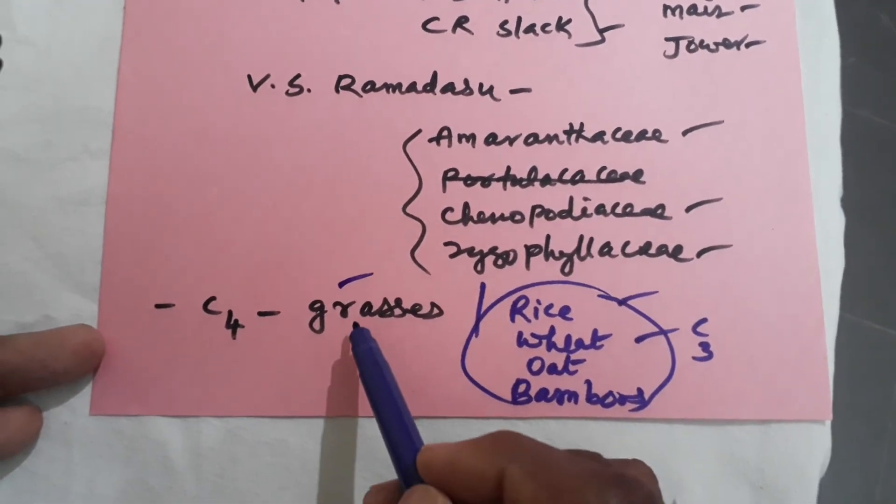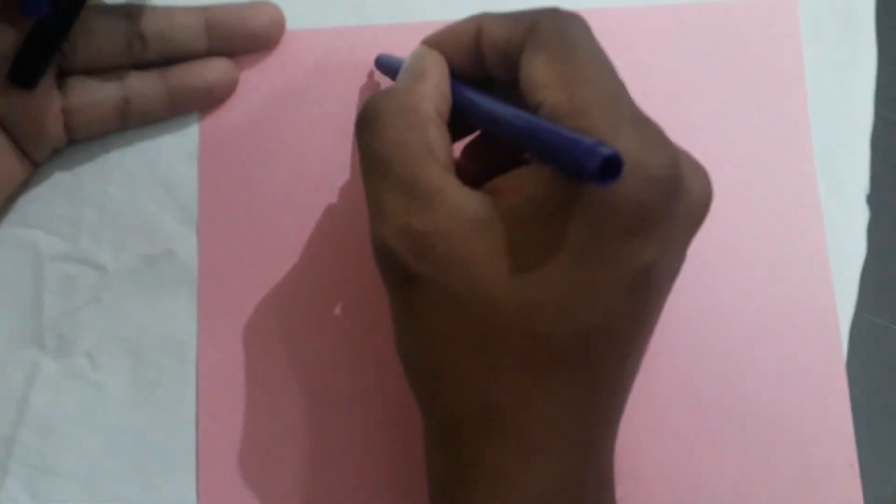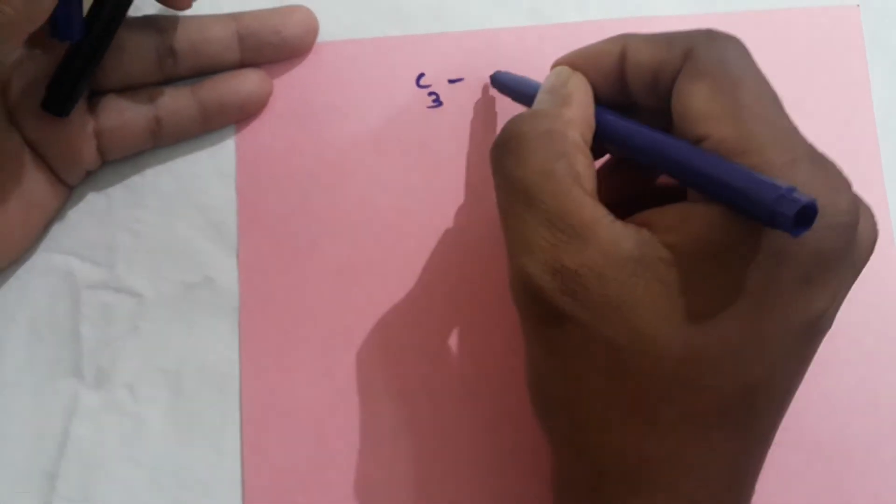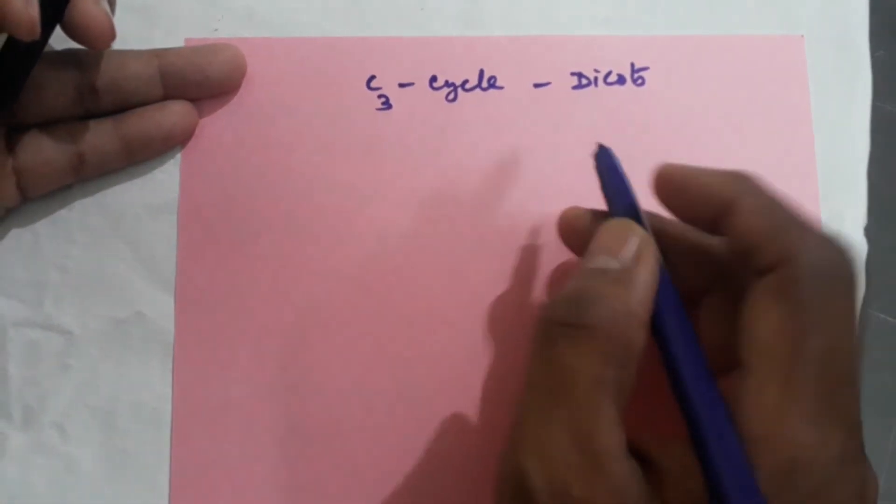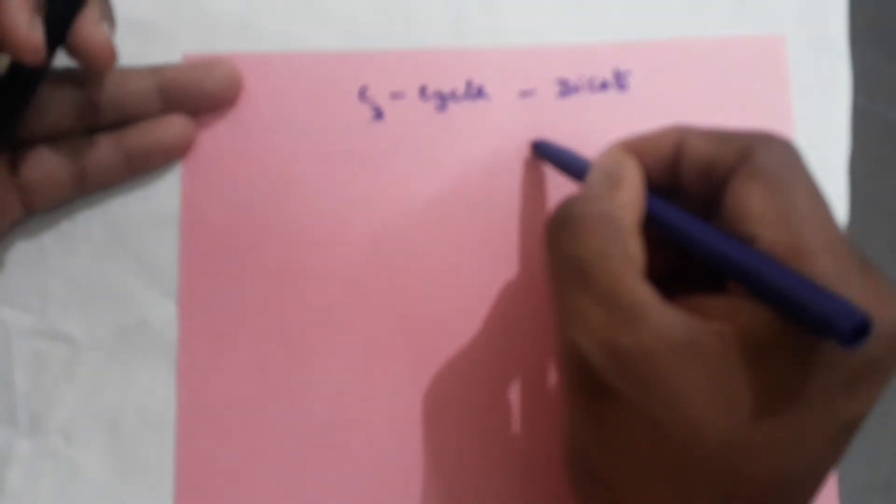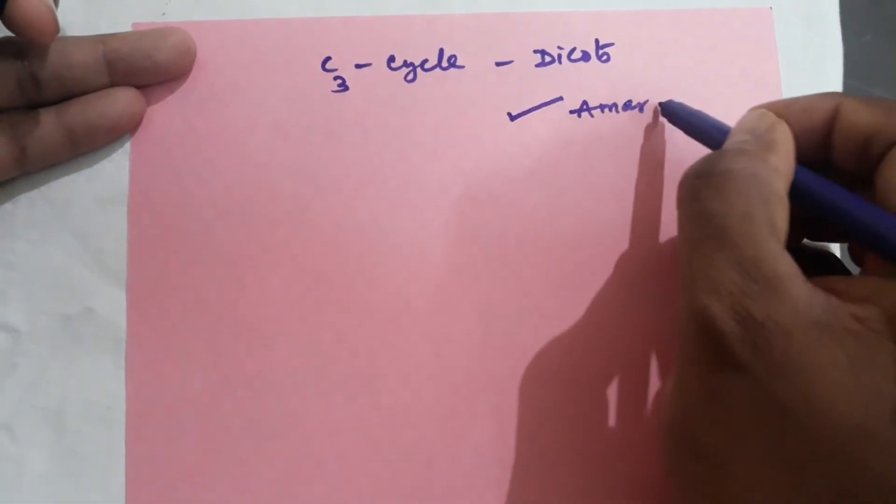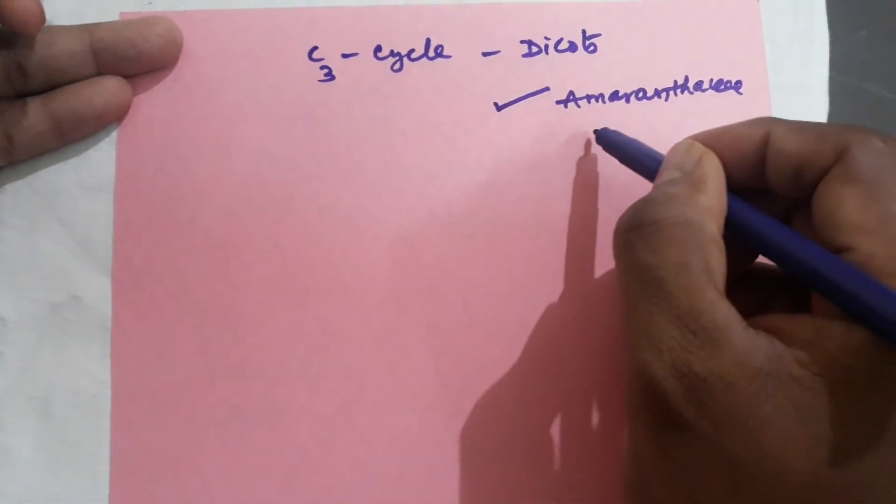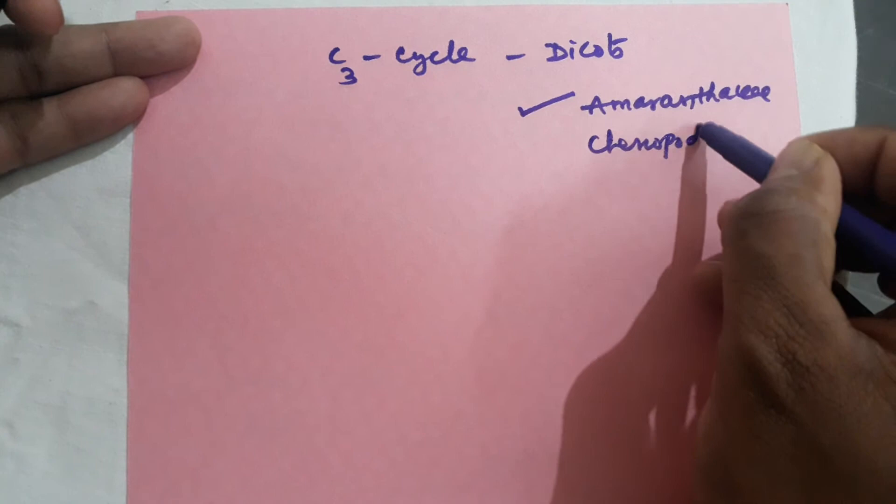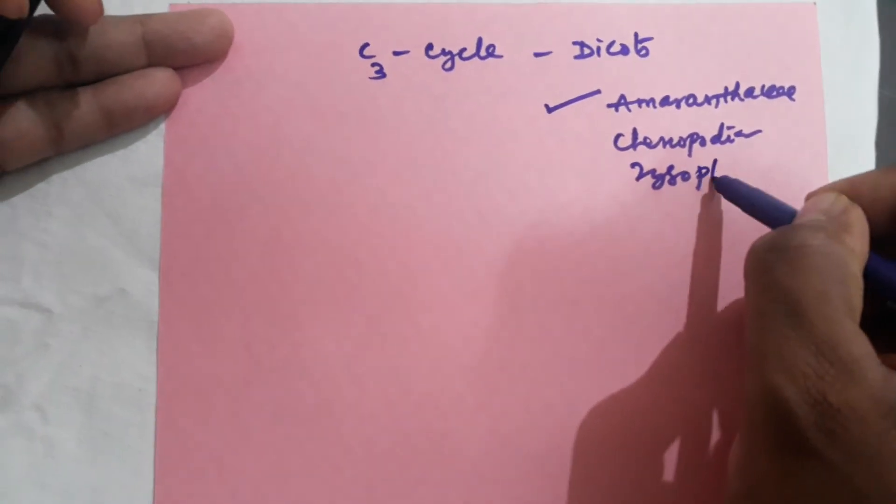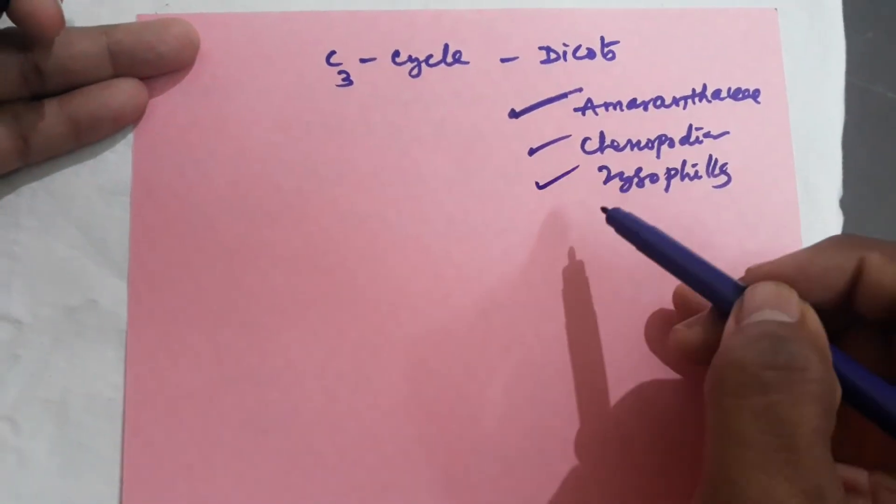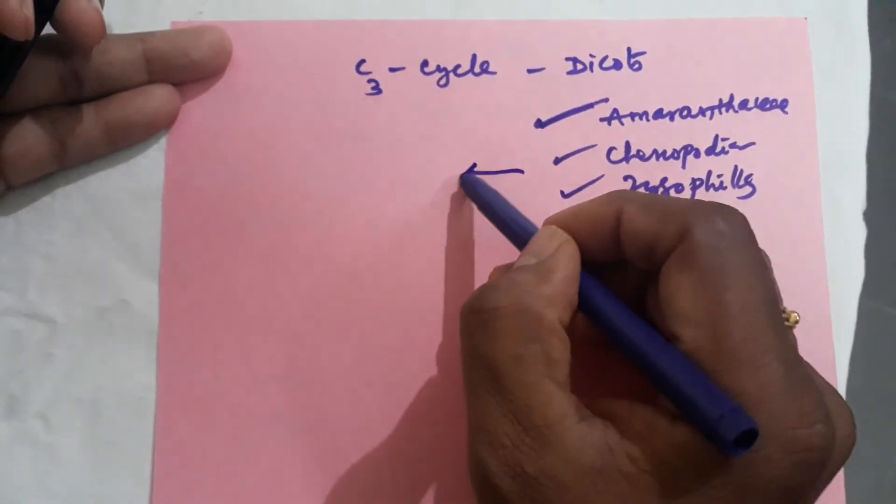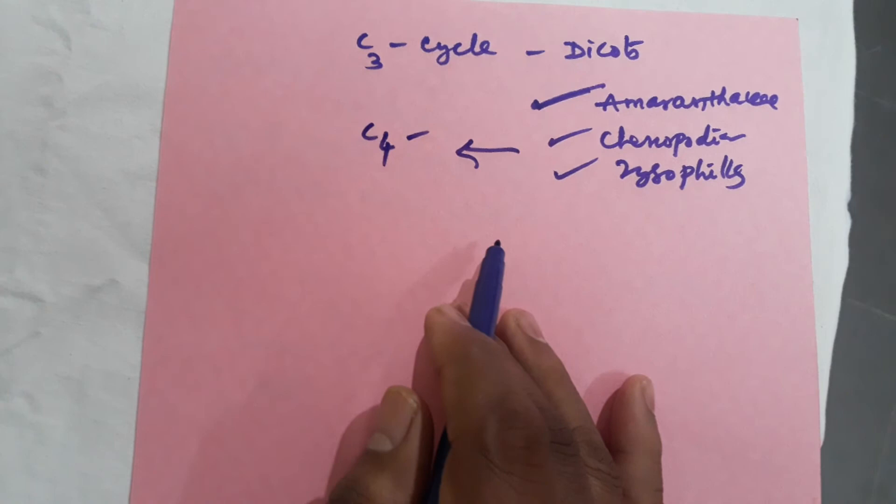At the same time, most of the dicotyledons exhibit C3 pathway. Most of the dicots exhibit C3 cycle. But an exception case is there, which are some Amaranthaceae, Chenopodiaceae, and Zygophyllaceae. Examples include Amaranthus viridis, Chenopodium album, and Tribulus terrestris. These plants are dicots, yet they exhibit C4 pathway. It is one of the exception cases.